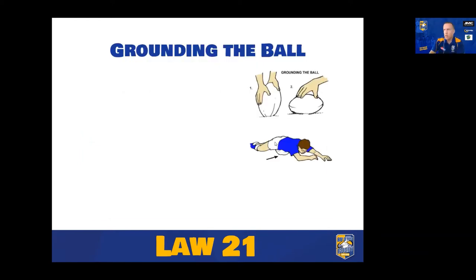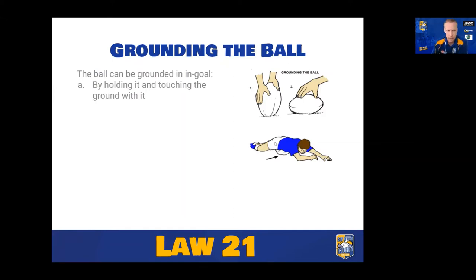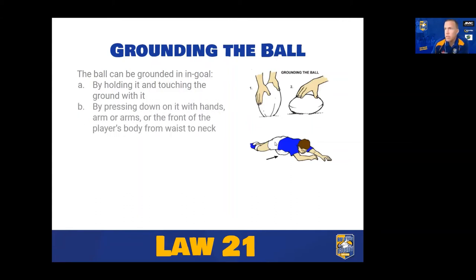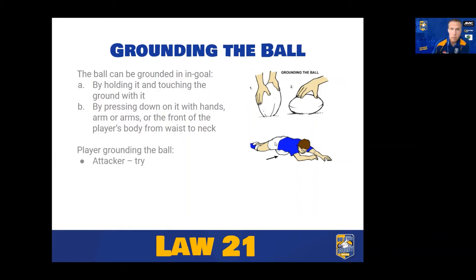In terms of grounding the ball, there are various ways this can happen. You can ground it by holding it and touching it to the ground, or by pressing it down with your hands, arms, or the front of your body from between your waist and your neck. Any part within that zone counts. If an attacking player grounds the ball it's deemed a try; if a defending player grounds the ball it's deemed a touchdown — those two definitions are crucial.